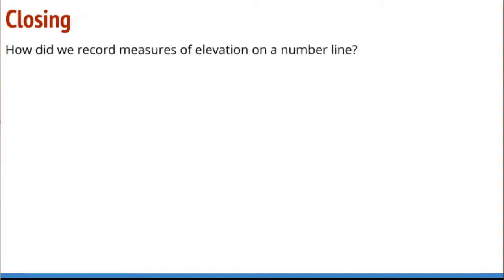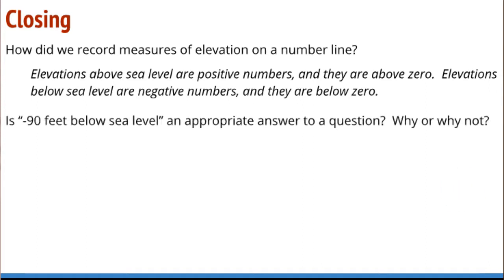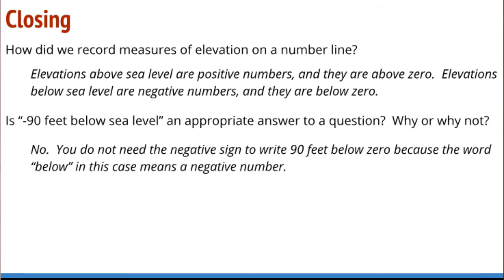Closing: how did we record measures of elevation on a number line? Elevations above sea level are positive numbers and they are above zero. Elevations below sea level are negative numbers and they are below zero. Is negative 90 feet below sea level an appropriate answer to a question? No, it's not okay. You've got the negative and the below sea level. By themselves, each is okay — put them together, they're not okay. You do not need the negative sign to write 90 feet below sea level, because the word below means a negative number. You're saying below twice.